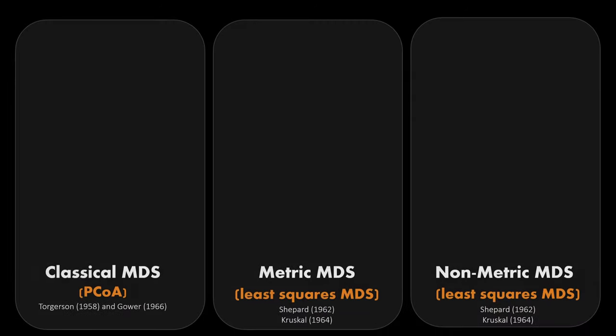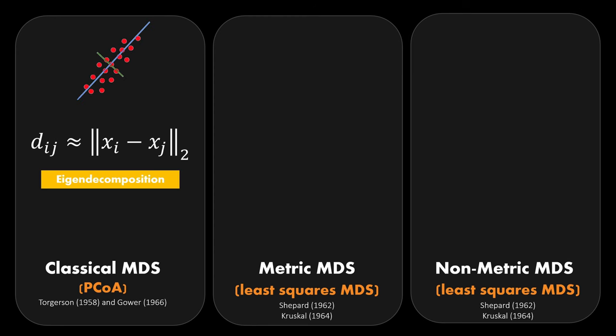As mentioned in the beginning, MDS is not one single algorithm, but instead a collection of methods. There are different ways to categorize them, but on a high level there are these three subcategories. The first one was independently published by Torgerson and Gower and is called the classical MDS. It shares a lot with principal component analysis and that's why it's also termed PCOA, principal coordinate analysis.